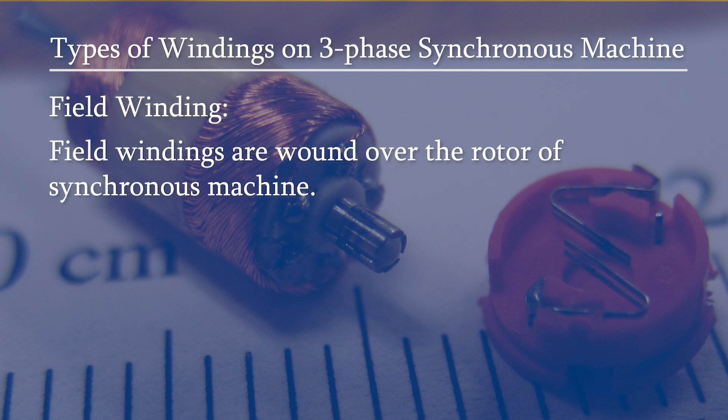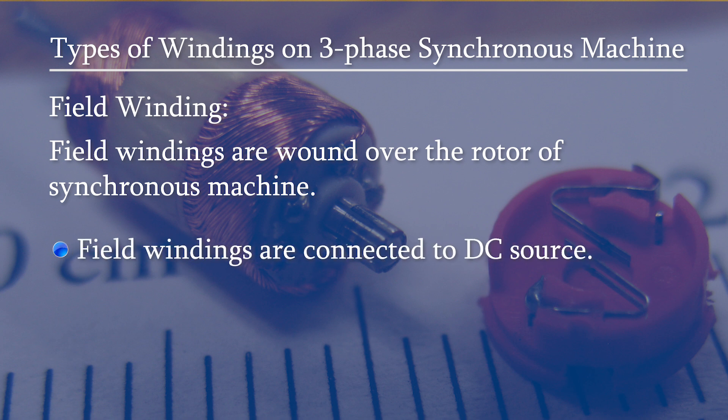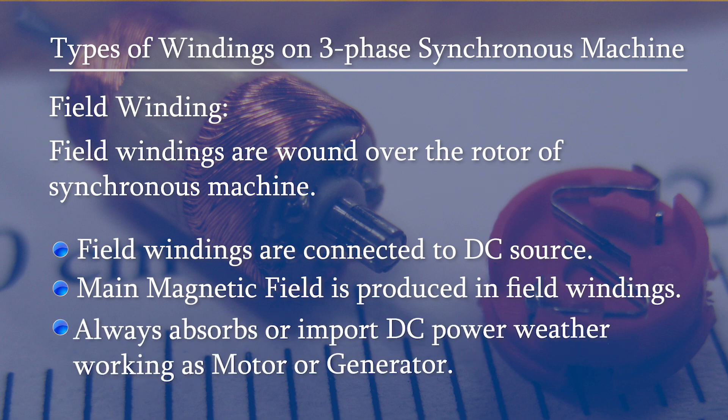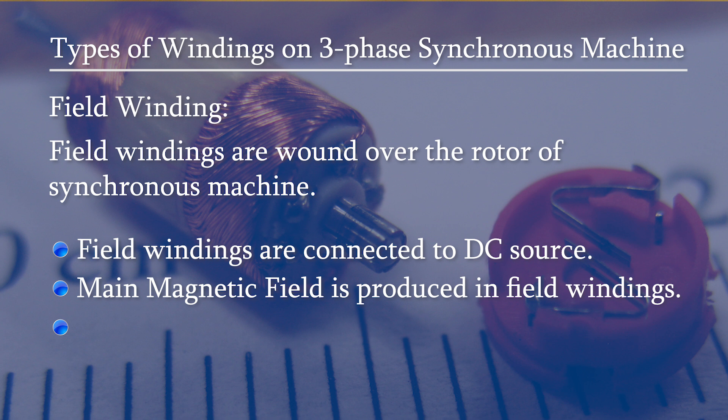Field windings are wound over the rotor of the synchronous machine and are connected to a DC source. When a magnetic field is produced in the field winding, it always absorbs or imports DC power whether the machine is working as a motor or generator. The AC power, when the machine is working as a generator, goes out of the machine, and when working as a motor it goes into the armature.